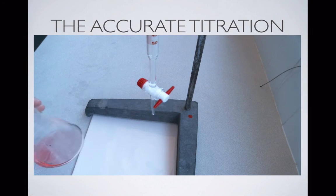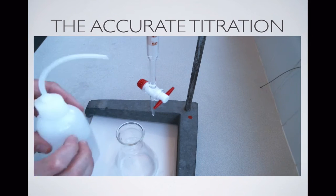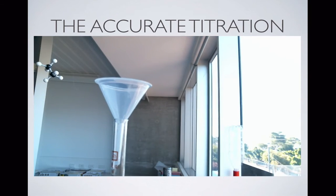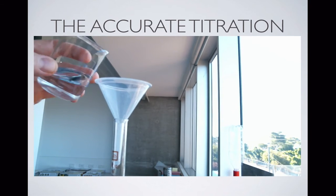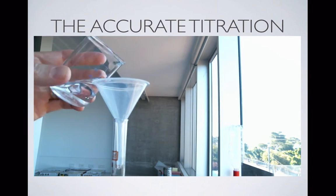Alright, so first we're going to empty out our flask from the last titration. We're then going to give that a good rinse with distilled water. We don't have to dry it out afterwards because the distilled water is not going to react with anything, so it doesn't matter how much is in the flask. Might just top up our burette if we think we haven't got enough liquid in there for another titration.